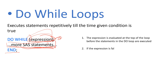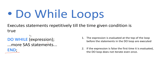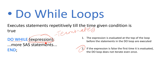The second point says: if the expression is false the first time it is evaluated, the DO WHILE loop does not iterate even once. So when the DO WHILE loop starts, it evaluates the condition right away, and if SAS finds the expression is false at that point, the loop terminates immediately without executing even once.